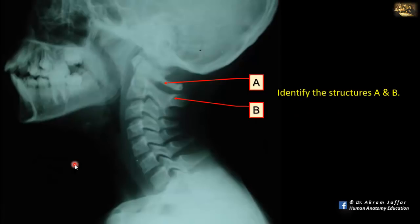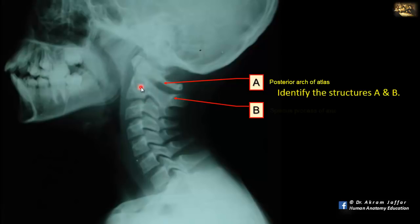Identify the structures A and B. This is a lateral view of an X-ray of the cervical vertebrae. A is the atlas vertebra, and this is the posterior arch of the atlas vertebra. The atlas vertebra doesn't have a spinous process — what looks like a spinous process is in fact the posterior arch of the atlas. B is the axis, the second cervical vertebra, and this is the spinous process of the axis.